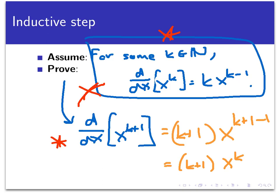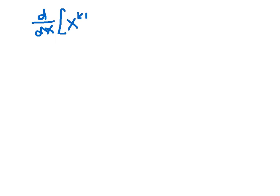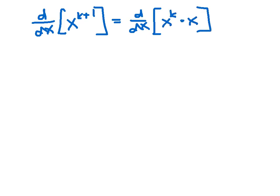At this point we actually have three assumptions in play: the inductive hypothesis, the product rule, and the fact that the derivative of x itself is 1. Let's start with the left-hand side of the expression we want to prove. Inside the derivative, we can replace x^(k+1) with x^k · x, splitting off one factor of x using exponent rules. Now we have a product of two things, so we can use the product rule to break it up.